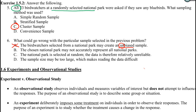B: 'The chosen national park may not accurately represent all national parks.' That sounds pretty good — that sounds like our sample is not representative of our population. I'm loving B, but like I said, you should read everything, because who knows.